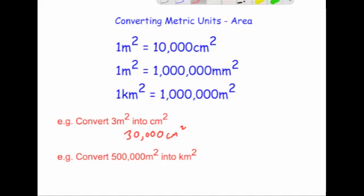Convert 500,000 meters squared into kilometers squared. One kilometer squared is one million meters squared, so to go from meters squared to kilometers squared we divide by one million. Dividing by a million means moving the decimal place six places to the left: one, two, three, four, five, six — giving us 0.5 kilometers squared. That makes sense: one million meters squared is one kilometer squared, so half a million would be half a kilometer squared.